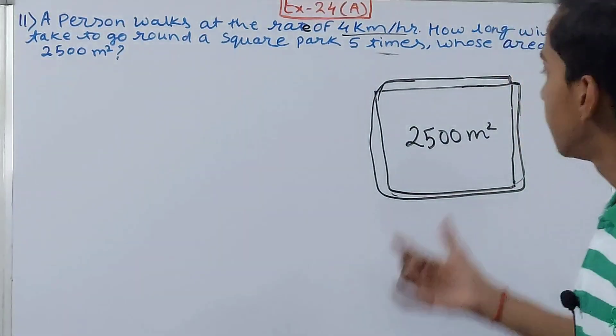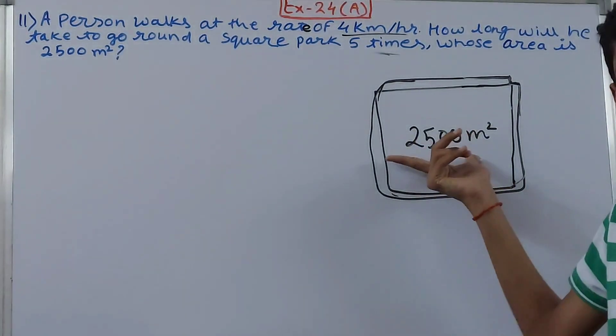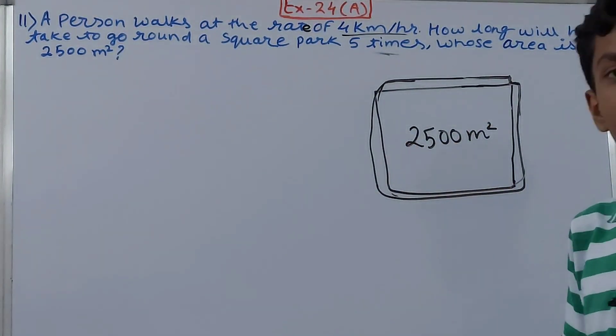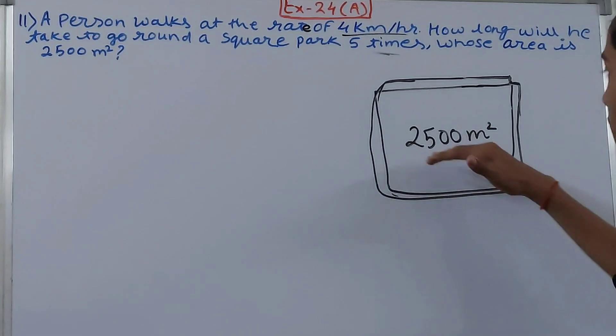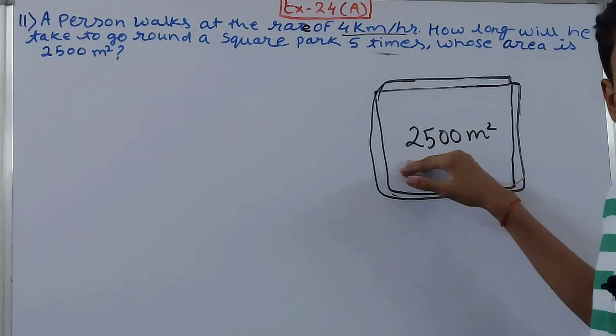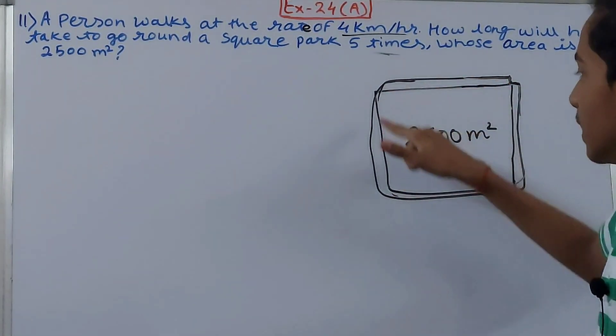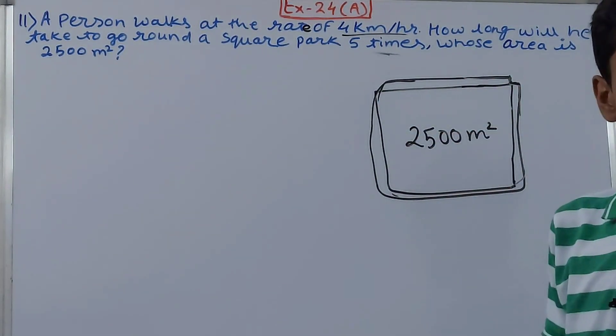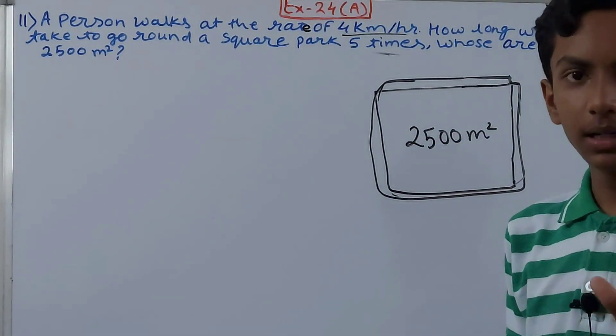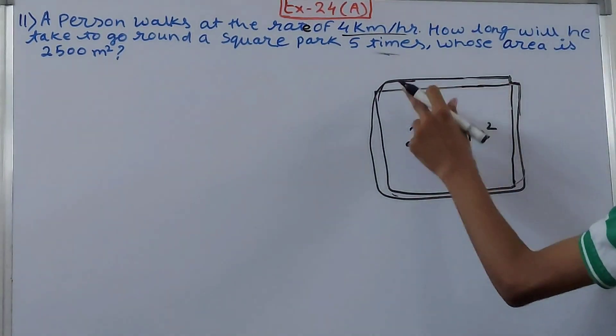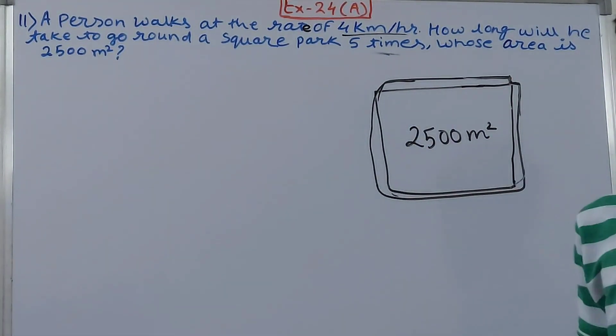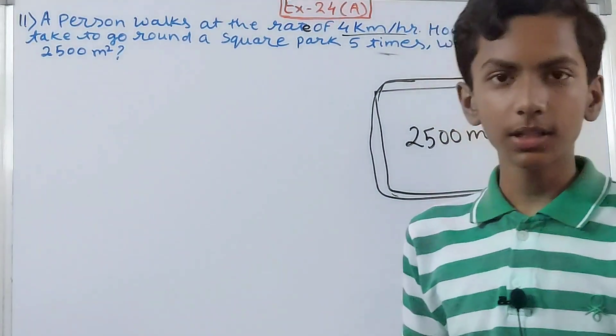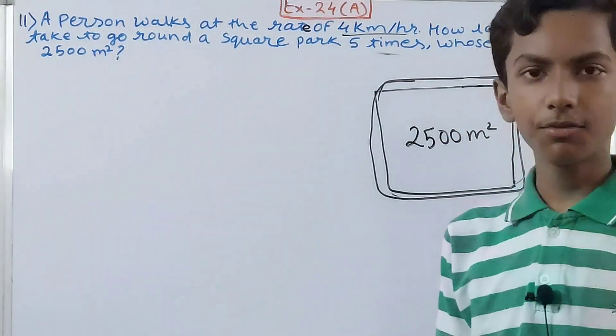For finding the time, will this area help us? Not directly, but indirectly it will help. Area will not provide us information about the distance of the park. The distance of the park is the boundary, because the person is going around the boundary only.